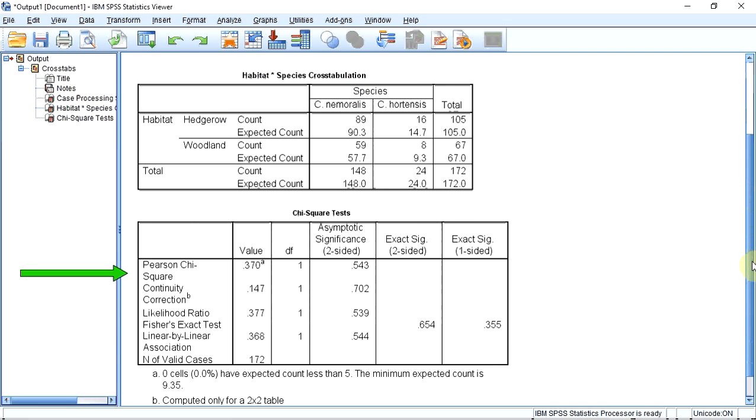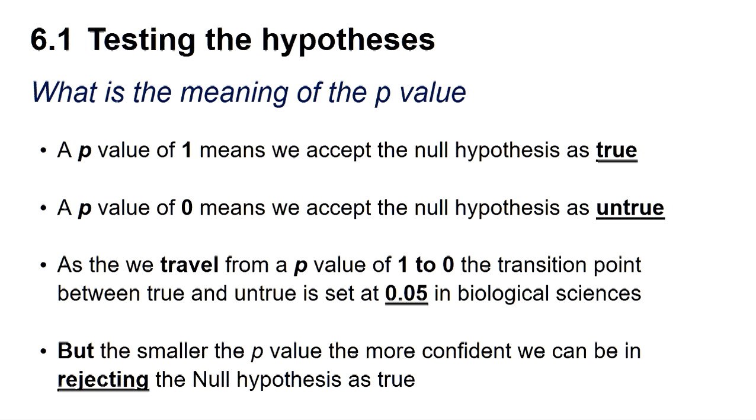What does this mean? A p-value of 1 means we can accept the null hypothesis as true, whereas a p-value of 0 means we can accept the null hypothesis as untrue. As we travel from a p-value of 1 to 0, the transition point between true and untrue is set at 0.05 in the biological sciences.